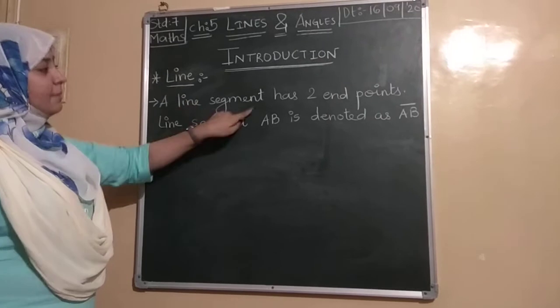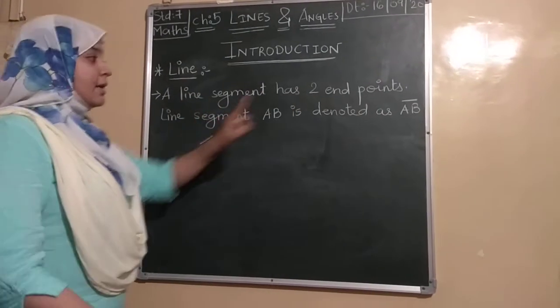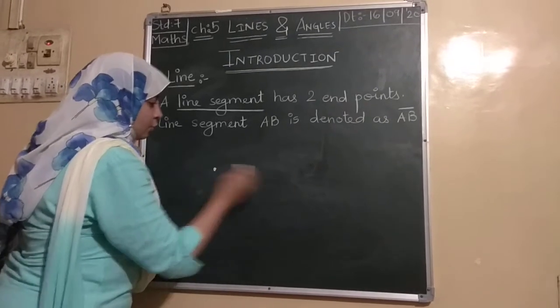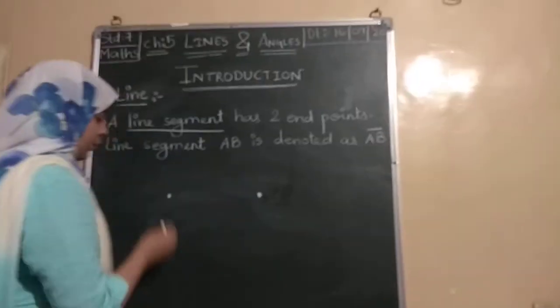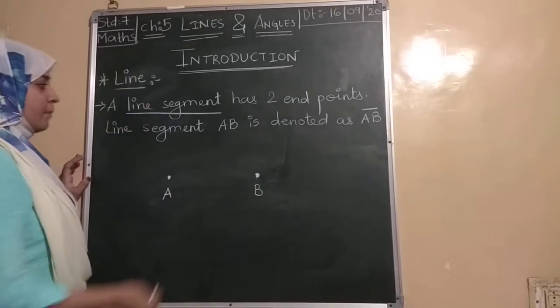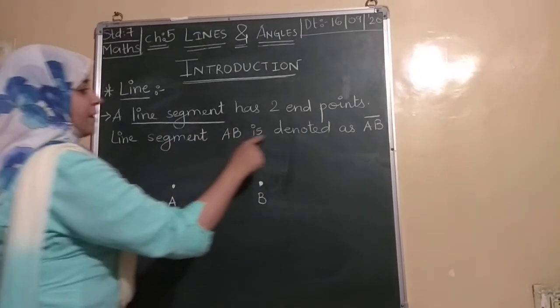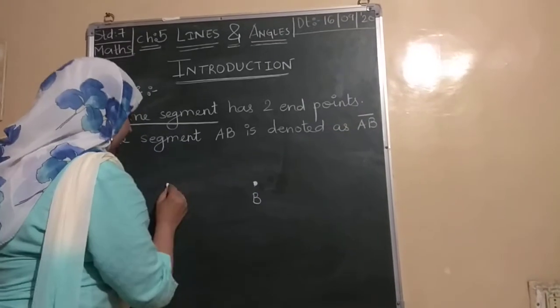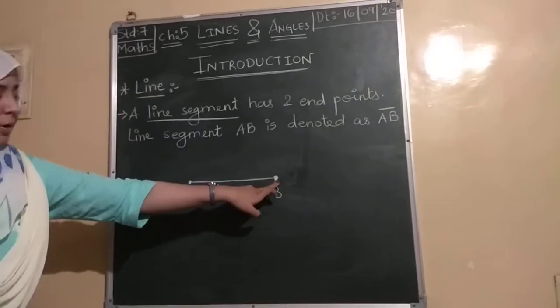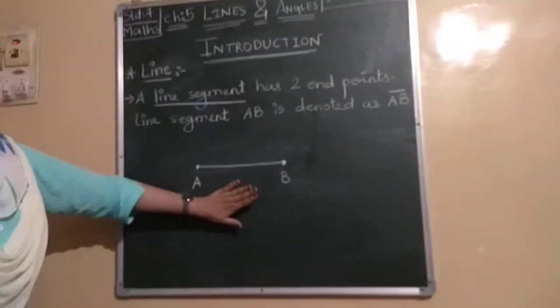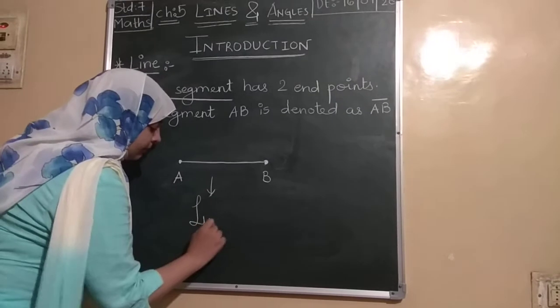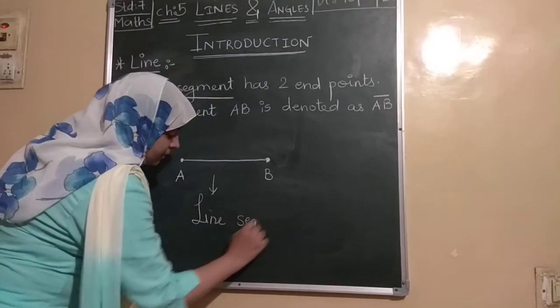Now, line segment. A line segment has two endpoints. One we can name as A and the other as B. Line segment A, B is denoted as A, B. We join these two endpoints with a straight line. This is known as line segment.